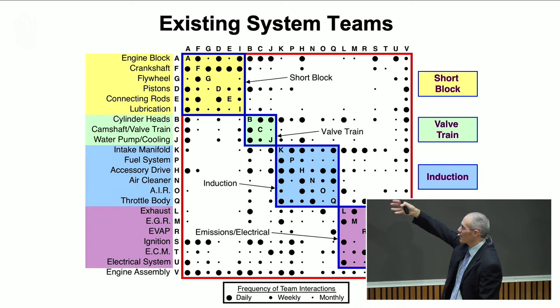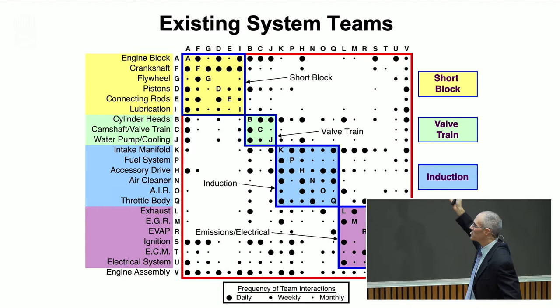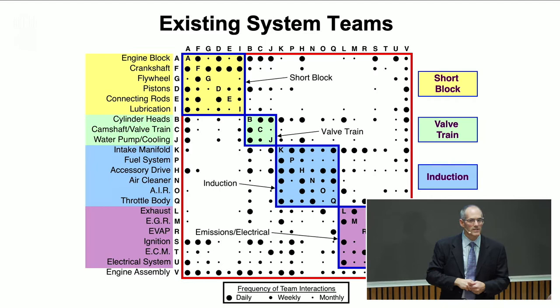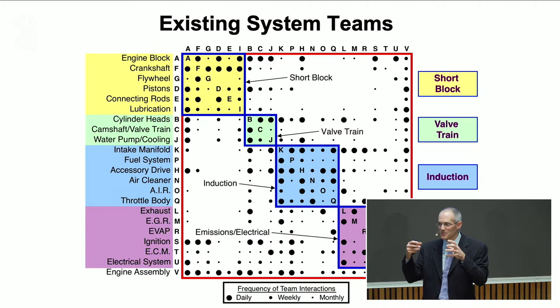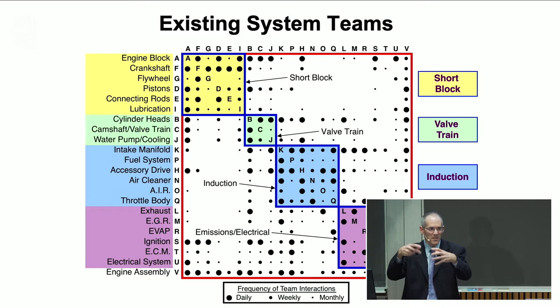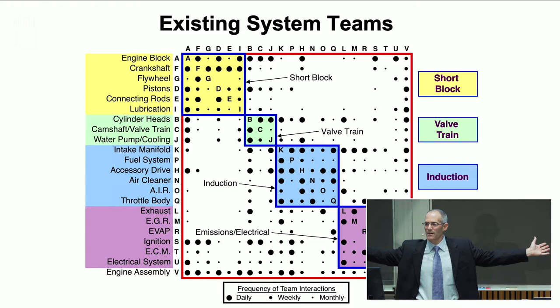They're working across those teams to get the components to work together — to get the whole induction system working correctly and create engine performance. But what happens to all those marks in the white space? The white space represents people who need to work together but have no formal structure, no meeting, no way to make sure it gets done. That represents a huge opportunity — what if there were a way to cluster this differently such that more of the interfaces happen inside the formal meetings and teams, and fewer are just hoped to happen correctly outside of those?